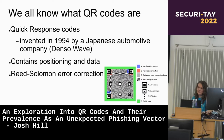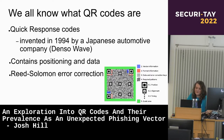We all know what QR codes are, right? They're little annoying squares that you scan with your phone. QR stands for Quick Response Codes, and they were invented in 1994 by Denso Wave to help with manufacturing.